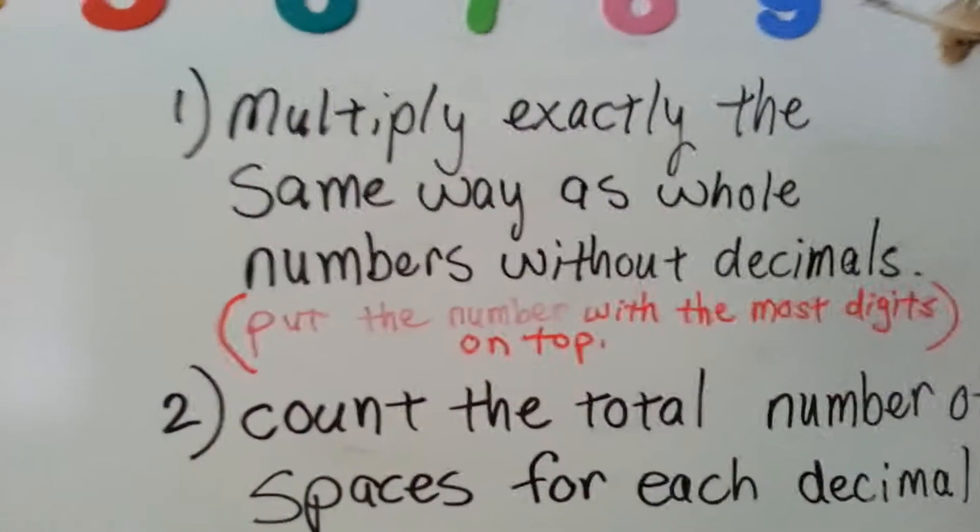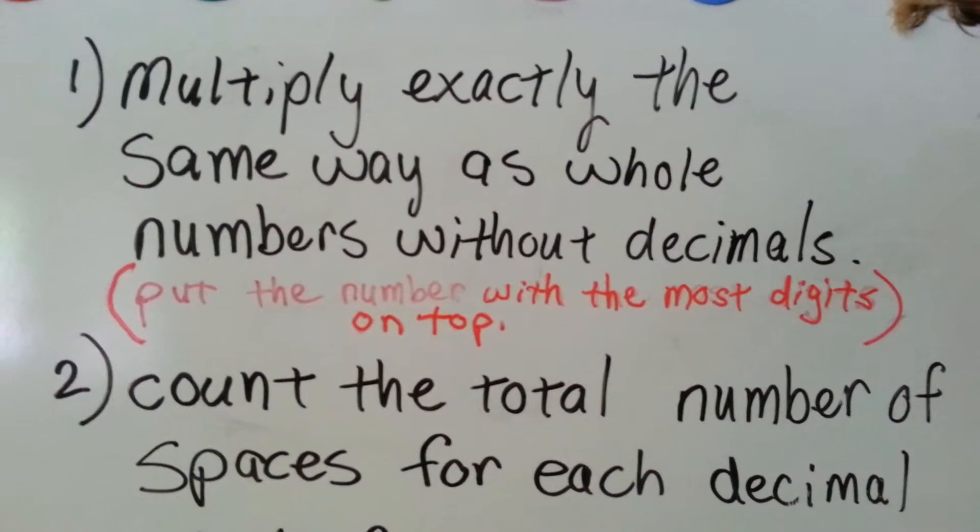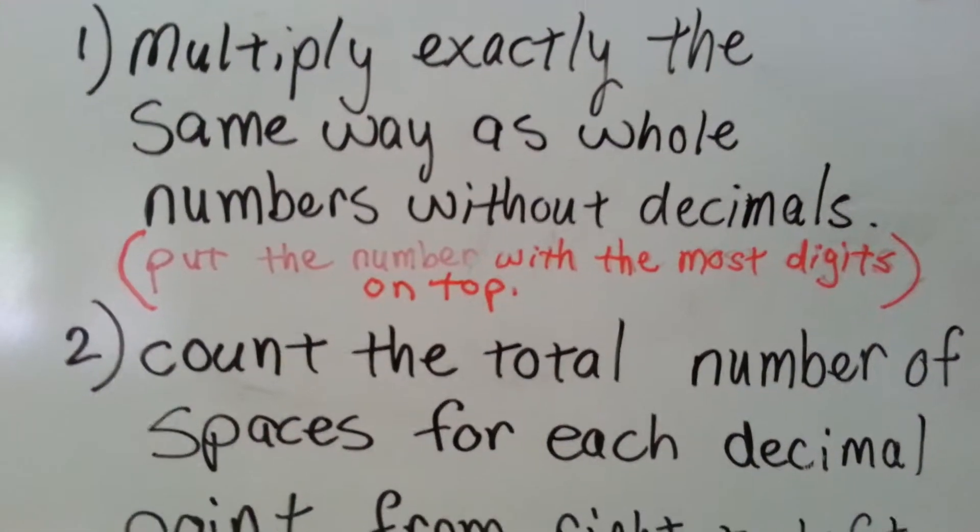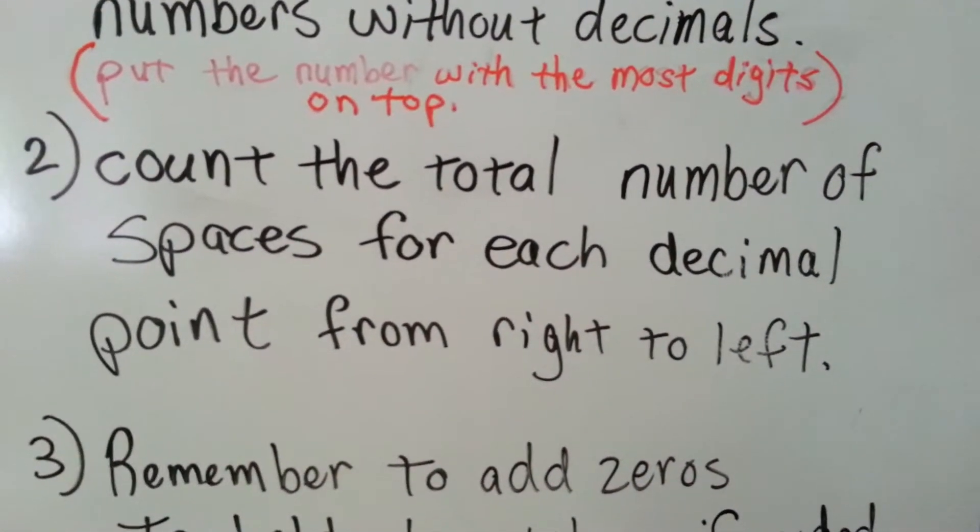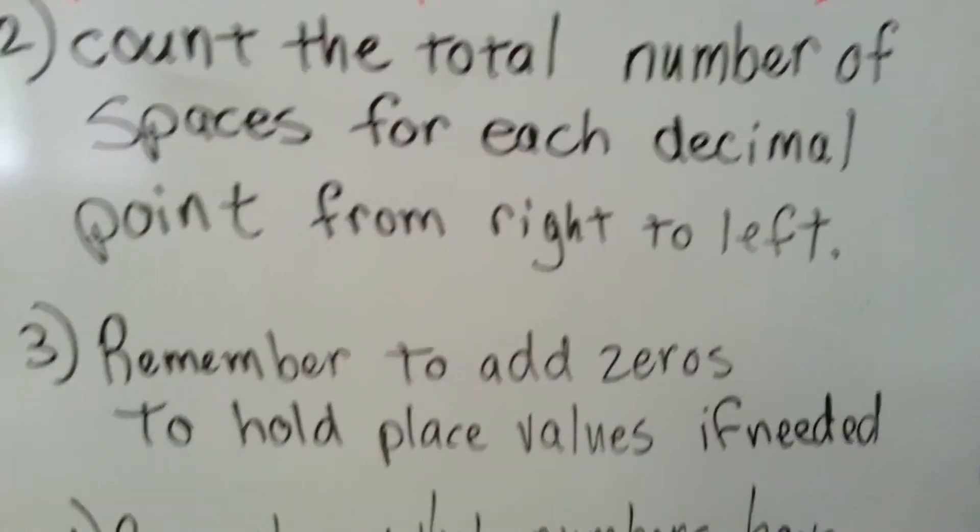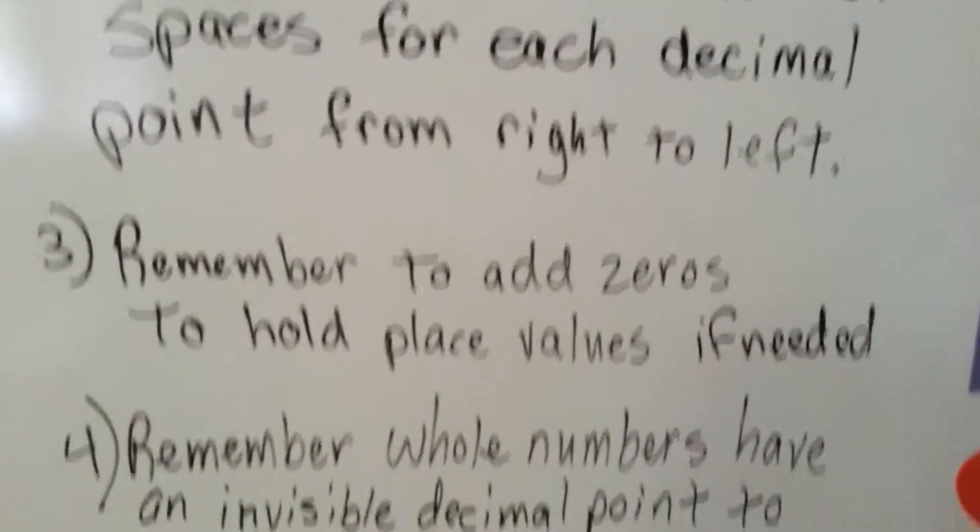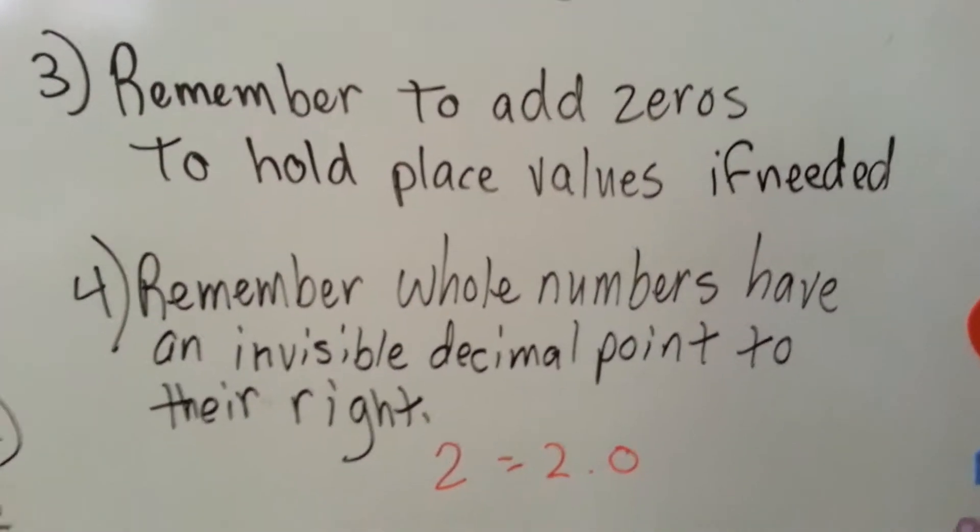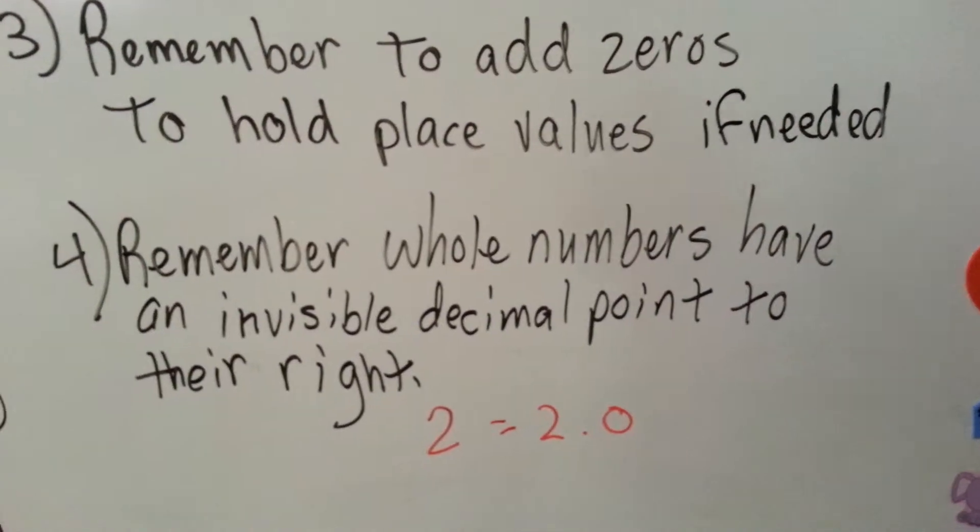When you multiply, you do exactly the same way as you would with whole numbers without decimals. You put the number with the most digits on top. For the answer, you count the total number of spaces for each decimal point from right to left, remember to add zeros to hold place values if you need to, and also remember that whole numbers have an invisible decimal point to their right. Two would become 2.0.